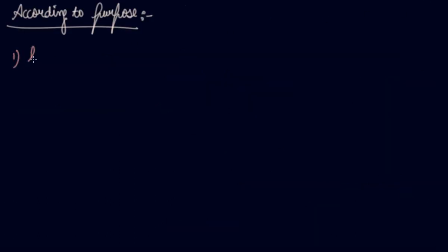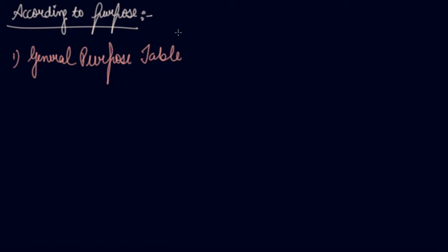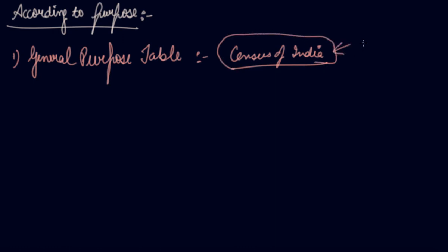According to purpose, number one is the general purpose table. Your general purpose table is the table which is of general use. It does not serve any specific purpose or specific problem under consideration. Such tables are just data banks for use of researchers for their various studies. For example, the reports and tables of the census of India — you, as a researcher, will use this table and draw some results. These are also known as reference tables, and from them you go to some specific research or specific purpose.